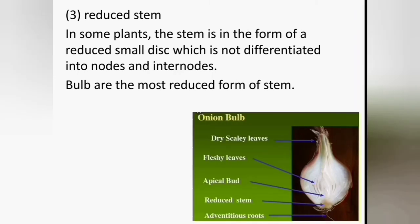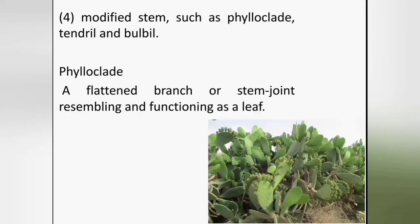In some plants, the stem is in the form of a reduced small disc which is not differentiated into nodes and internodes. Bulbs are the most reduced form of stem. For example, Allium cepa. Modified stems include phylloclade, tendril and bulbils. Phylloclade means a flattened branch or stem resembling and functioning as a leaf. In some plants such as cacti, the flattened green stems perform the function of a leaf. Such a stem adapted for the manufacture of food is called a phylloclade.